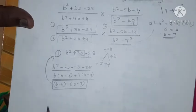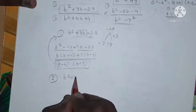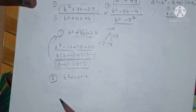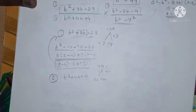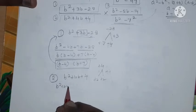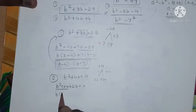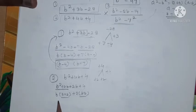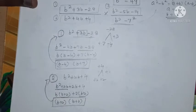Next, factorizing polynomial 2: b squared plus 4b plus 4. We need two numbers that multiply to plus 4 and add to plus 4, which are plus 2 and plus 2. Splitting: b squared plus 2b plus 2b plus 4. Taking b common gives b plus 2, and taking 2 common gives b plus 2. So the factors are b plus 2 times b plus 2.